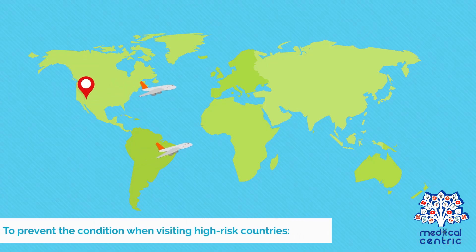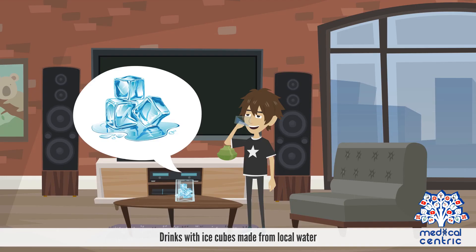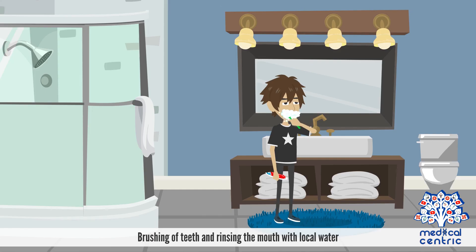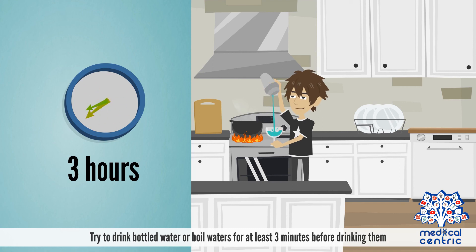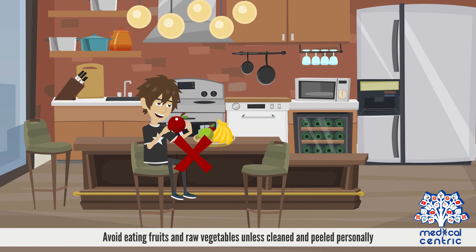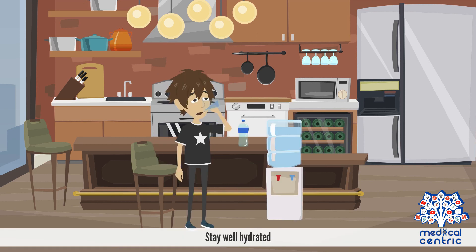To prevent the condition when visiting high-risk countries, avoid unsterilized water such as drinks with ice cubes made from local water, mixed fruit juices with tap water, and brushing teeth or rinsing the mouth with local water. Try to drink bottled water or boil water for at least 3 minutes before drinking. Avoid eating food from street vendors, avoid swimming in contaminated water, avoid eating fruits and raw vegetables unless cleaned and peeled personally, and stay well hydrated.